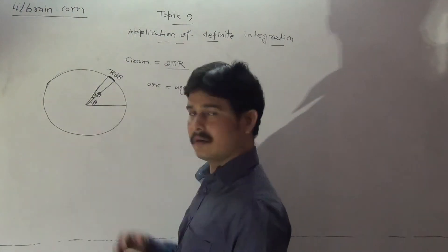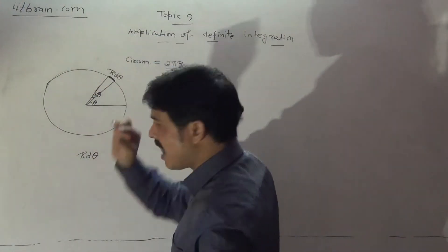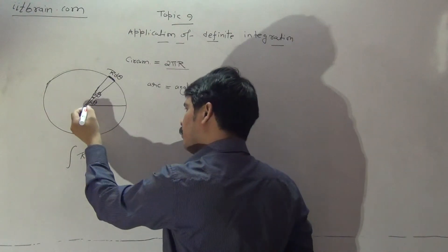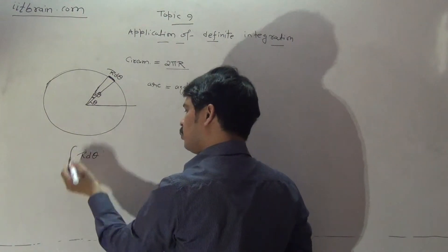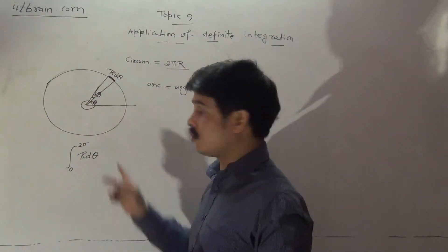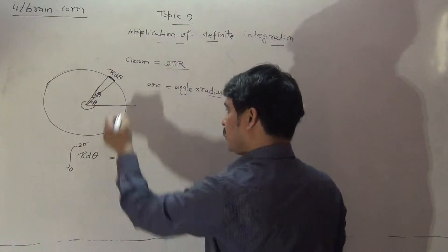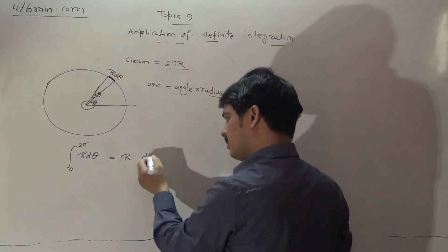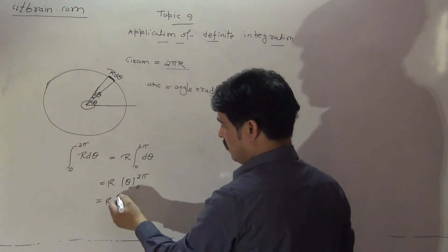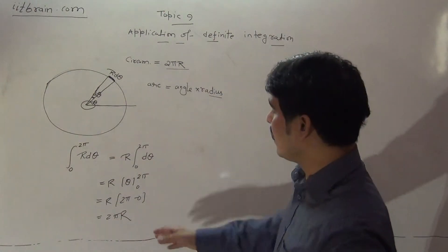By definite integration, if we integrate the arc length r dθ, this gives the complete circumference. We integrate from the initial angle 0 to 2π, since 2π is the angle that covers the complete circle. So circumference = integral of r dθ from 0 to 2π = r × [θ] from 0 to 2π = r × (2π − 0) = 2πr. Thus the circumference of the circle is 2πr.